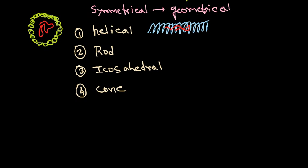If I draw the rod-like structure it is a completely different type. In the rod-like structure, the protein molecules are arranged and organized to make a structure like that. Now the icosahedral structure is completely different.